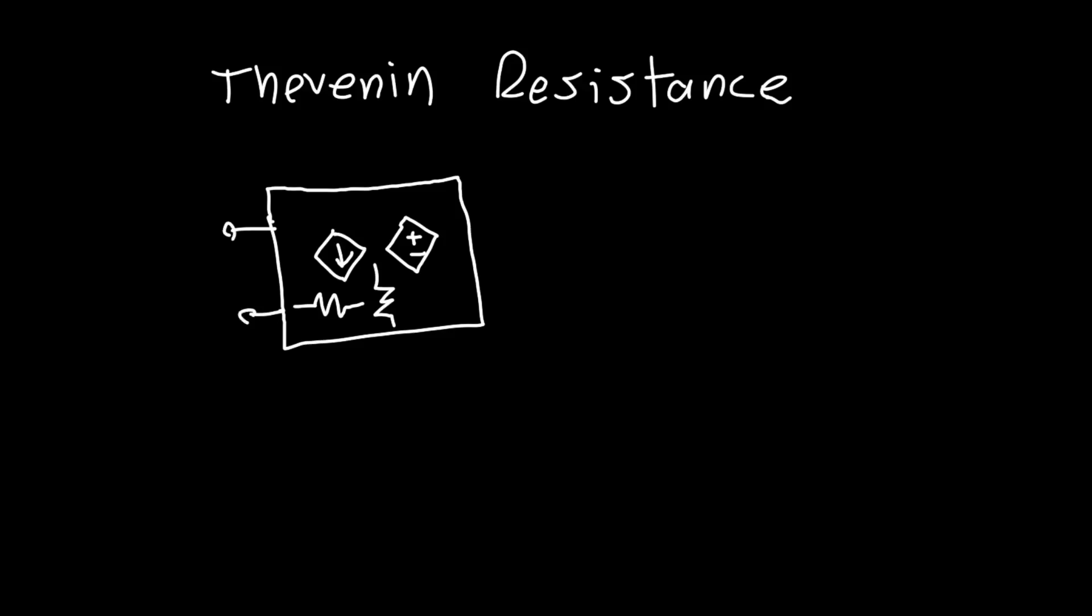If you just take one terminal of that mess, so you take one node from one resistor and another node from another resistor, and let me just erase this old terminal so I don't confuse anyone. If you take any two nodes inside this box and then you apply a voltage...